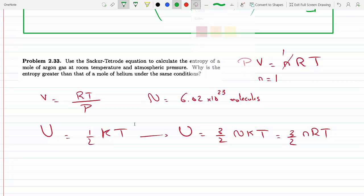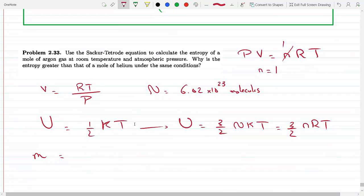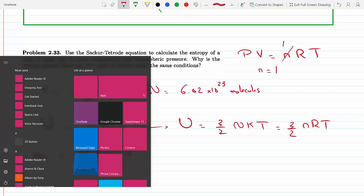The mass for argon, if we go to the periodic table, is 39.948 grams times 10 to the minus 3 kilograms.